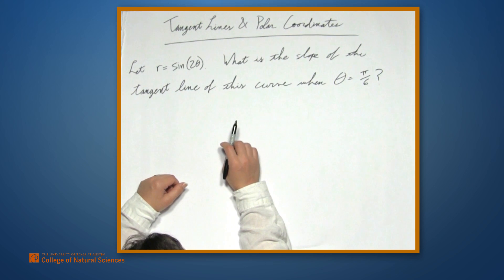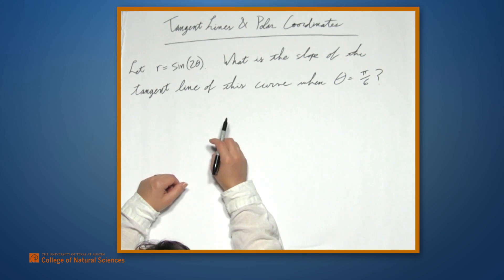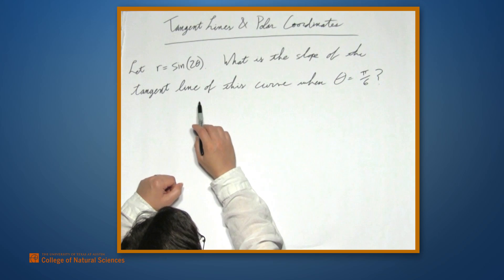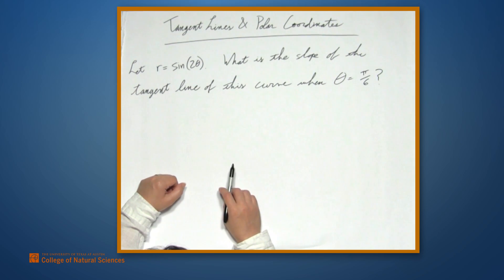We're here at the example table. In this video, we're going to talk about tangent lines and polar coordinates. So let's let r equals sine of 2 theta. We want to find the slope of the tangent line of this curve when theta equals pi over 6.